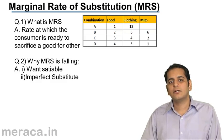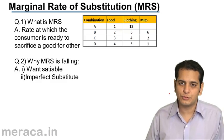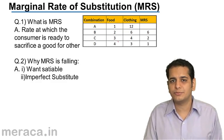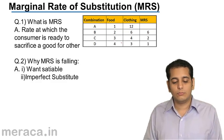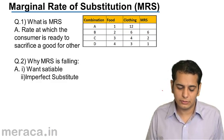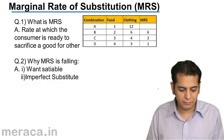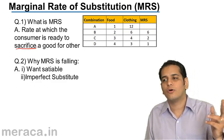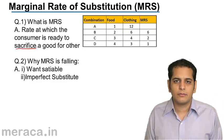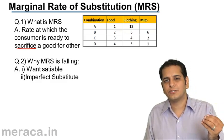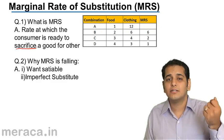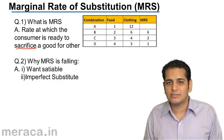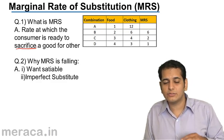Let's understand what is marginal rate of substitution. Marginal rate of substitution is nothing but the rate at which the consumer is ready to sacrifice one good for another. Marginal rate of substitution calculates the sacrifice rate — at what rate the consumer is ready to sacrifice the good that he has for the other.